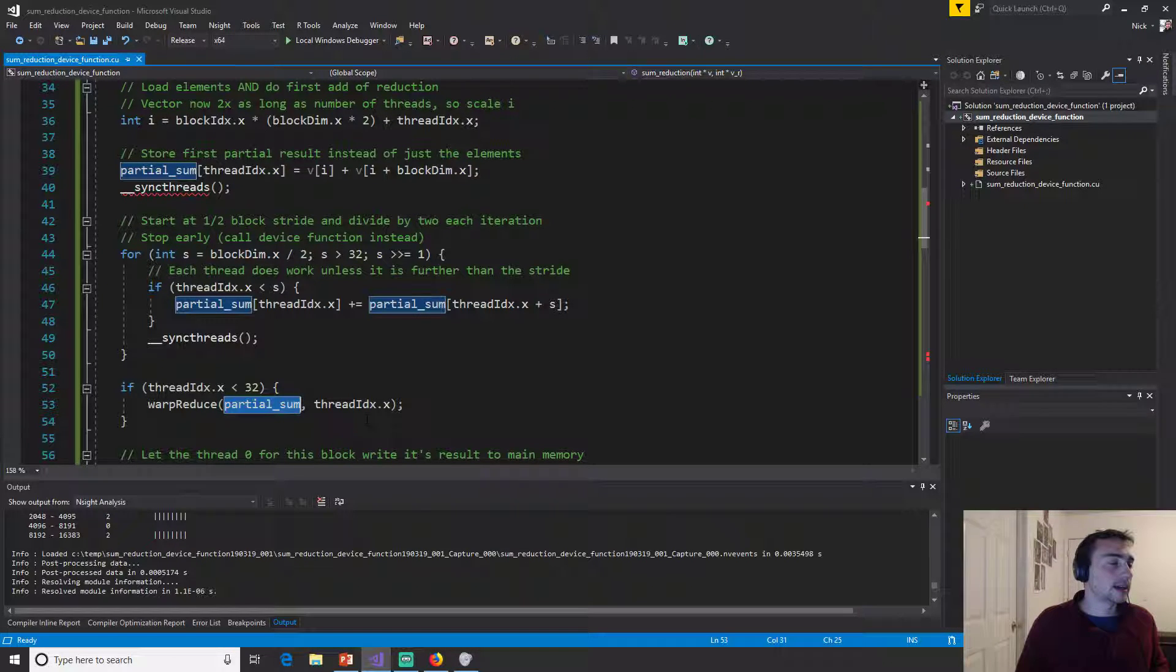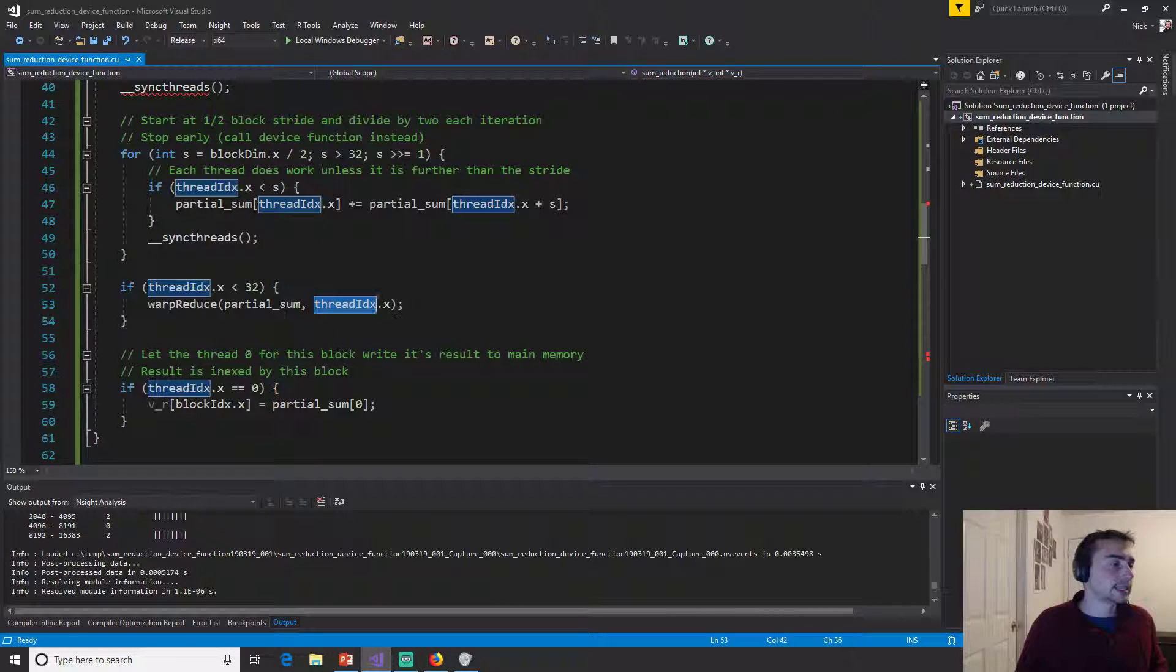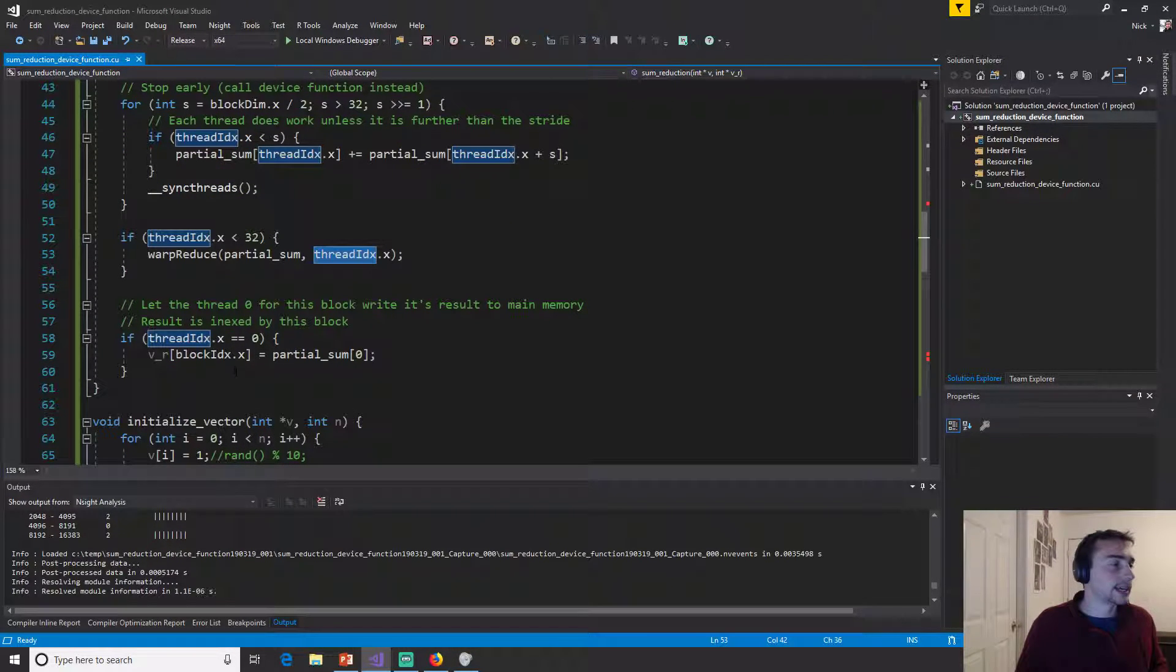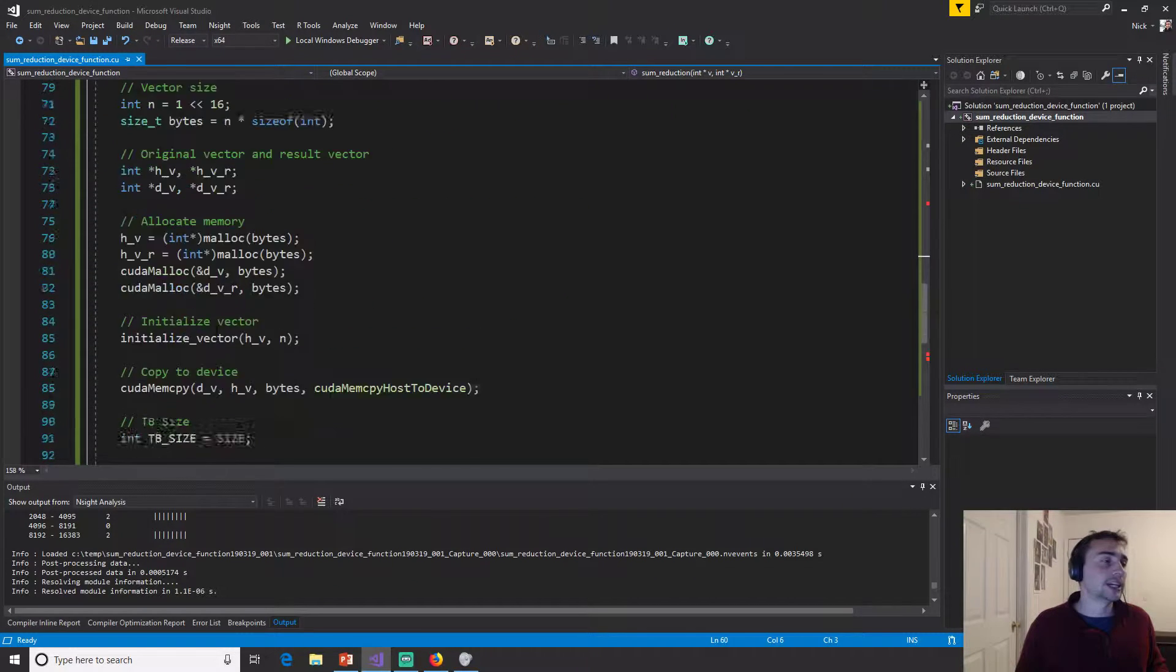And then finally, if thread ID X is equal to zero, we do that final write back like we've always been doing. So what this will do is compute those last couple iterations of sum reduction. But at the end, after this point, by the time we get to this check right here where we're just looking at the first thread of the entire thread block, we're at the exact same state that we were in every single other one of our implementations.